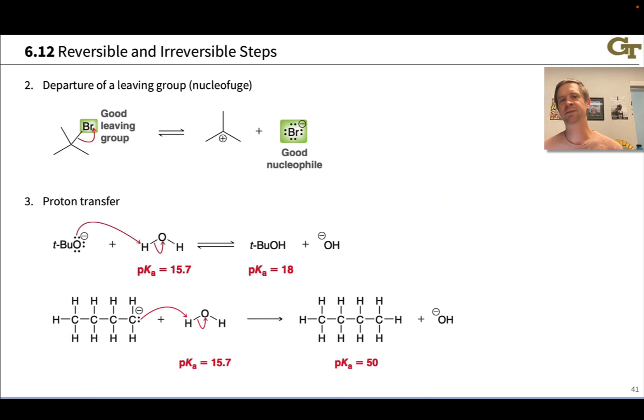Departure of a leaving group from a neutral molecule is quite frequently reversible, particularly when the leaving group thus generated is still a good nucleophile. We'll have much more to say about what makes a good nucleophile later in the course. For the time being, take my word for it that bromide is a pretty good nucleophile. This means that the reverse of this step, the nucleophilic attack of bromide on the carbocation, this kind of nucleophilic attack going in the reverse direction does occur to a significant degree.